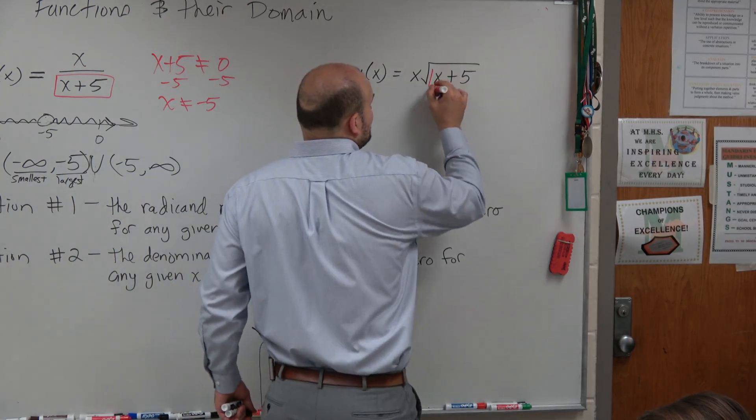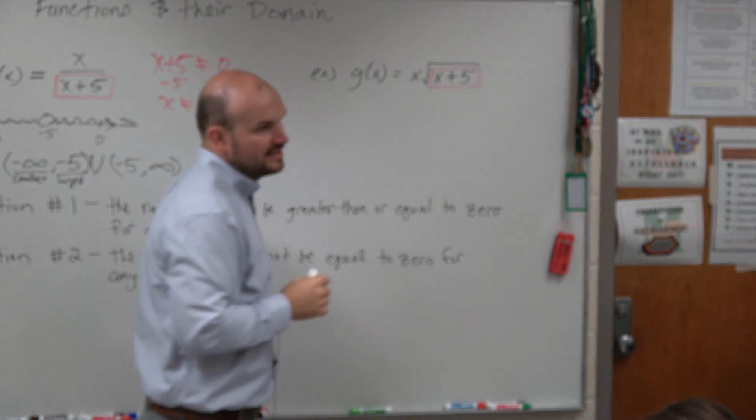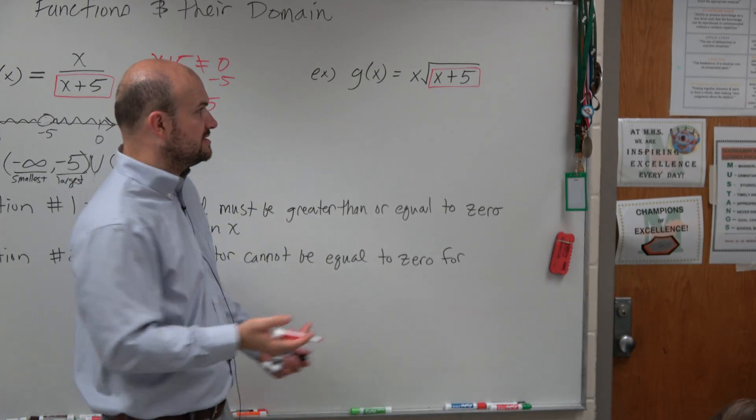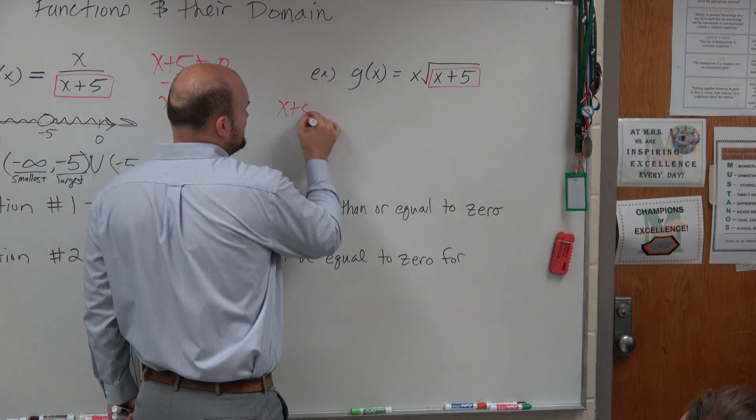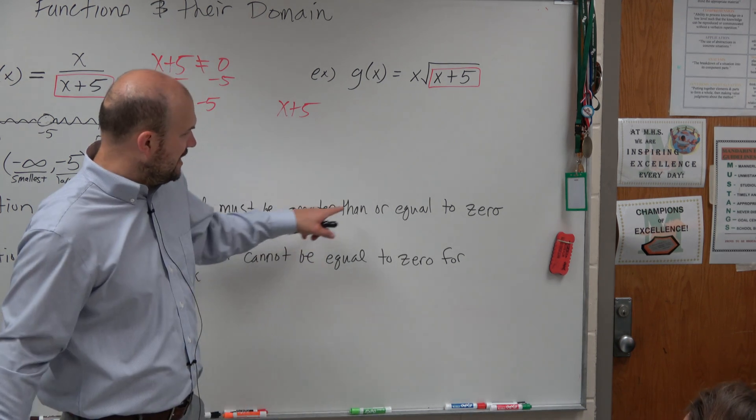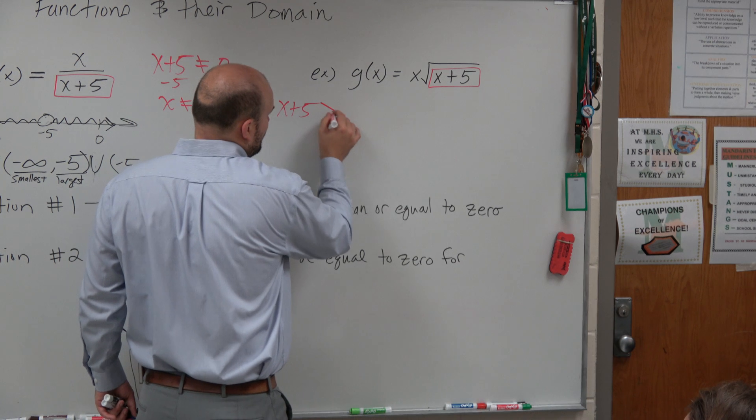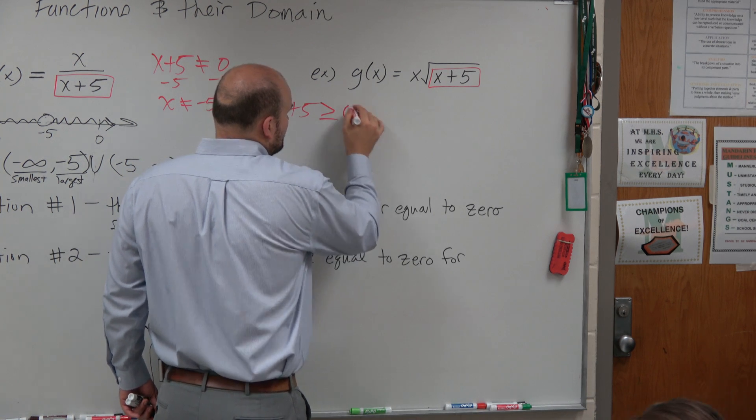So here, we just have a nice expression. And that's nice, right? But it's going to get crazy. But anyways, x plus 5 is greater than or equal to 0.